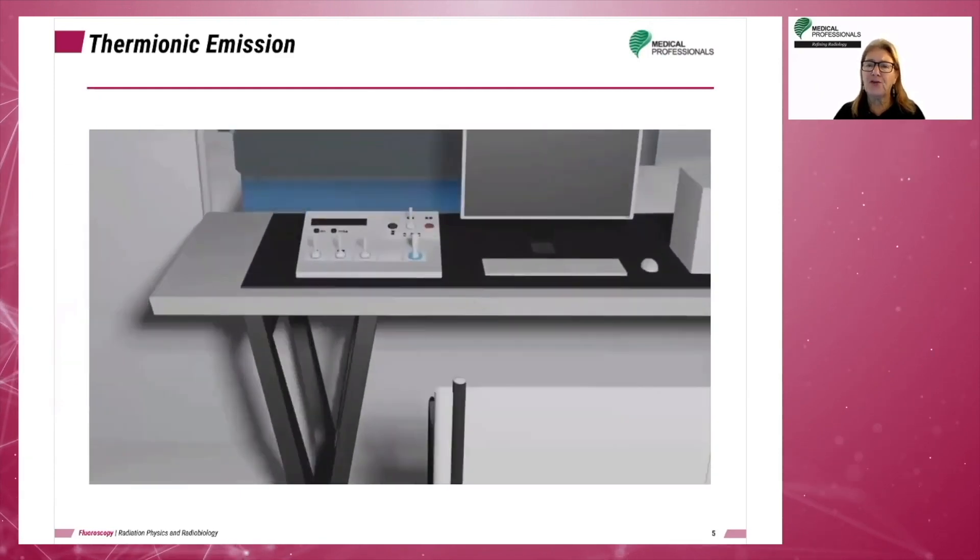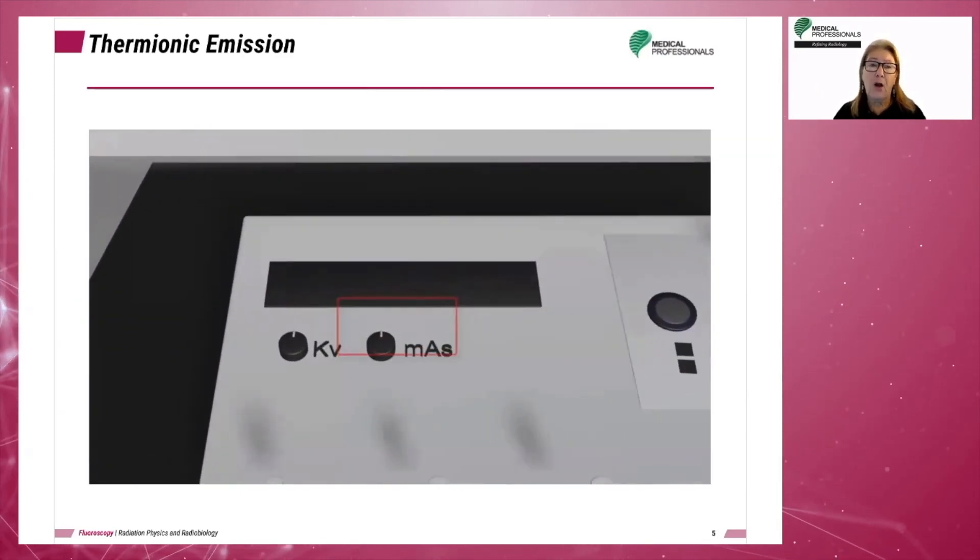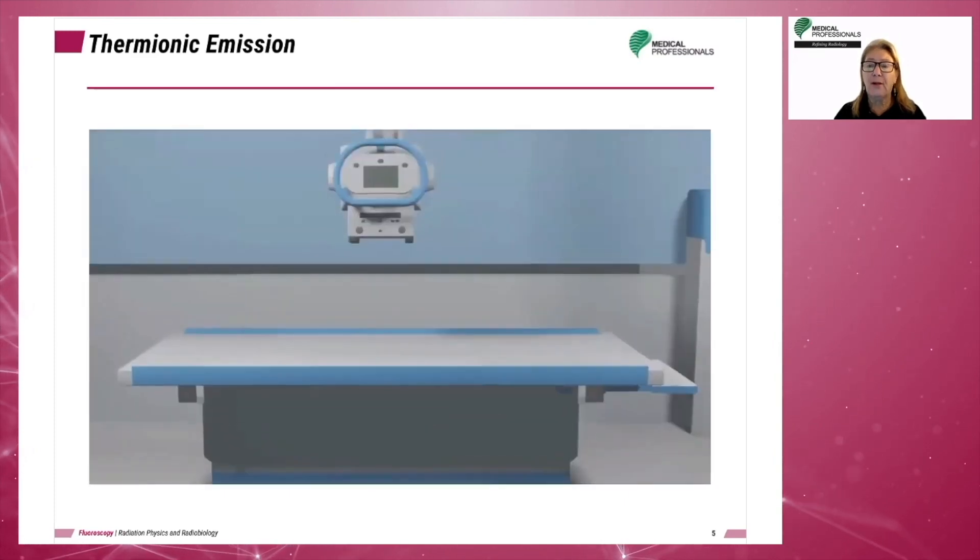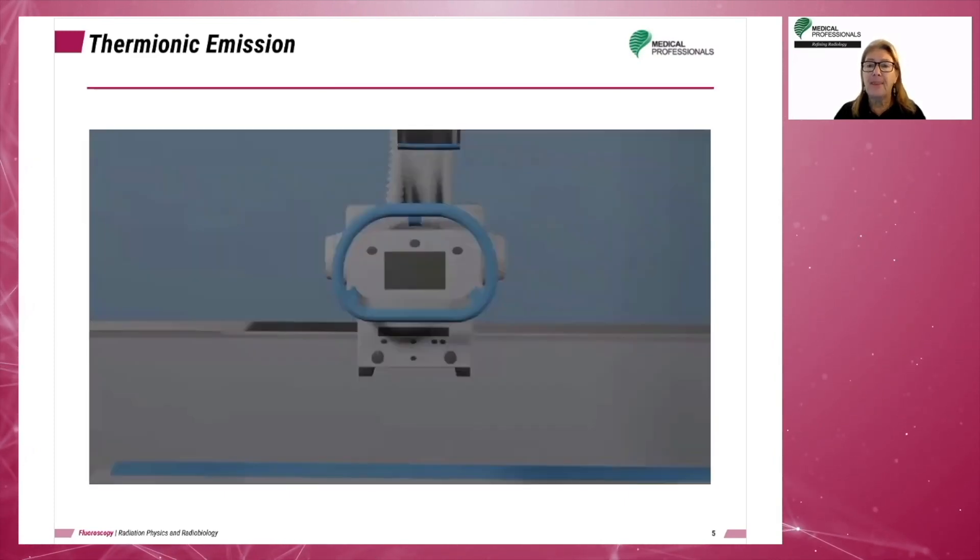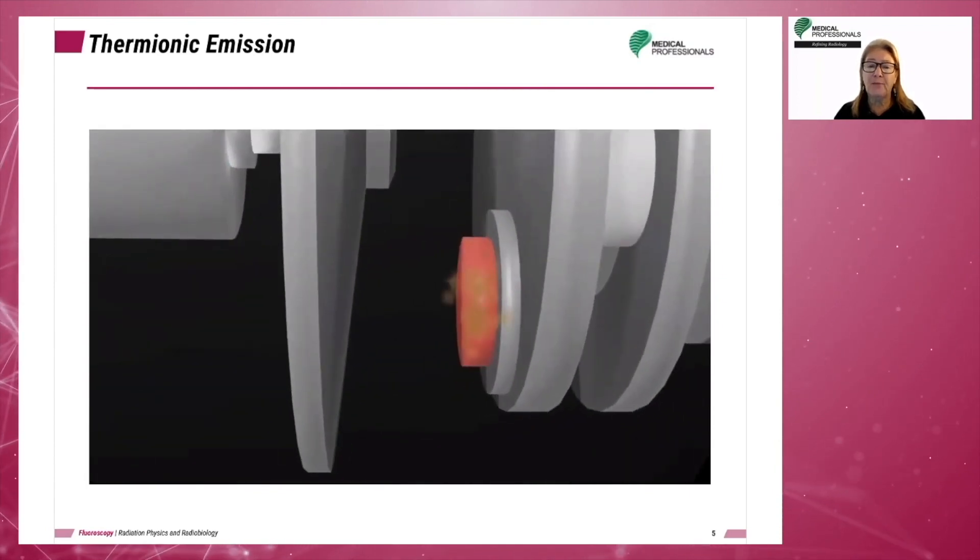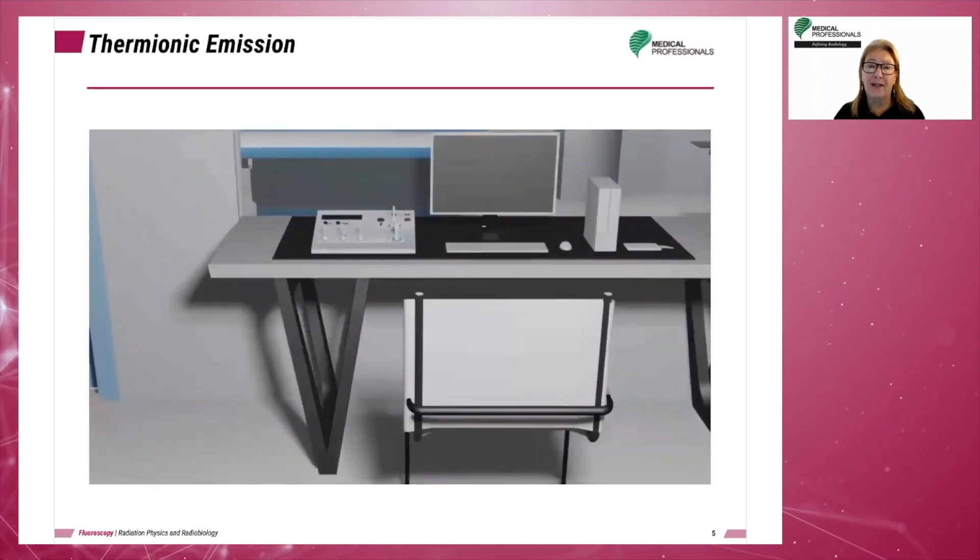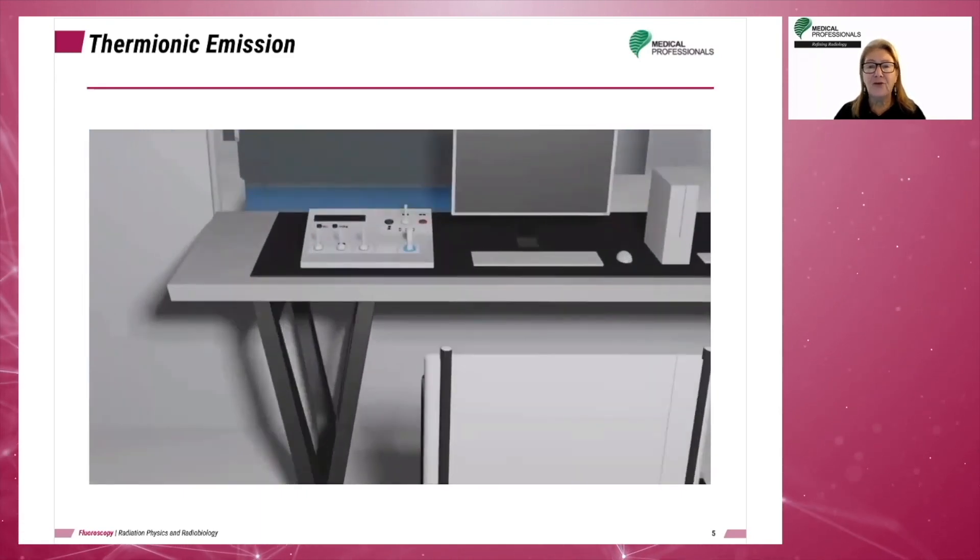When the rotor of an X-ray machine is activated, a small current causes electrons to boil off at the filament. The higher the mA, the more electrons will be present. This process is known as thermionic emission. The electrons float in a little cloud near the filament until voltage is applied to the tube.